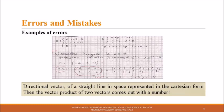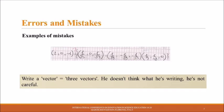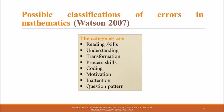In the figures we show examples of errors: directional vector of a straight line in space represented in Cartesian form, then the vector product of two vectors come out with a number. In this figure we show examples of mistakes. The student writes a vector equals three vectors. He doesn't know what he's writing, he's not careful.